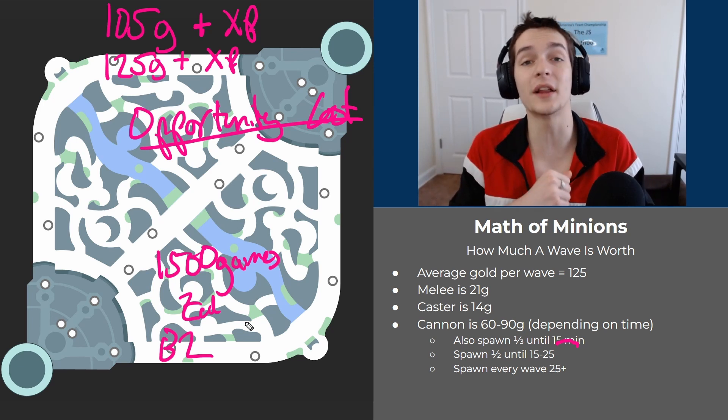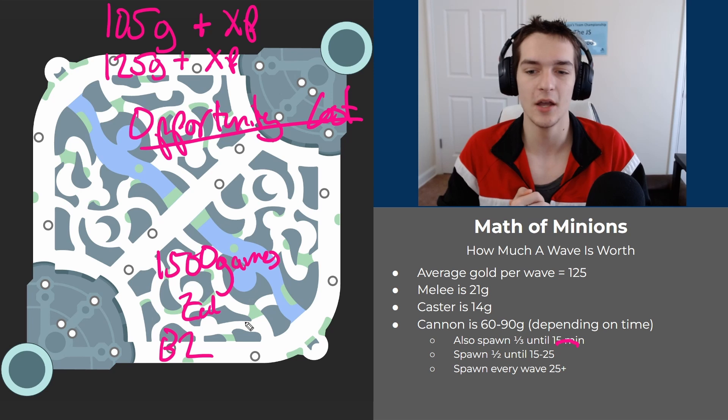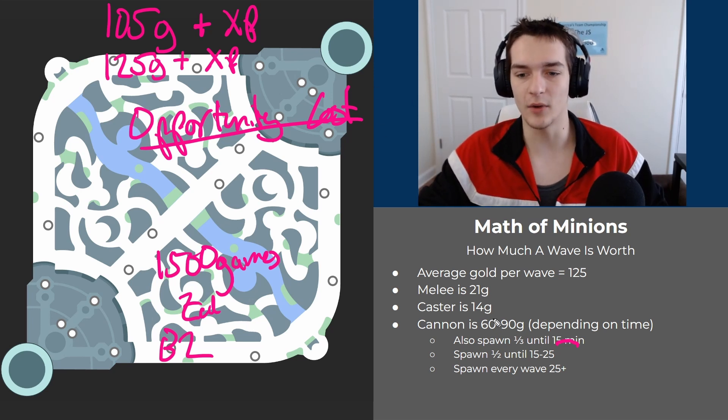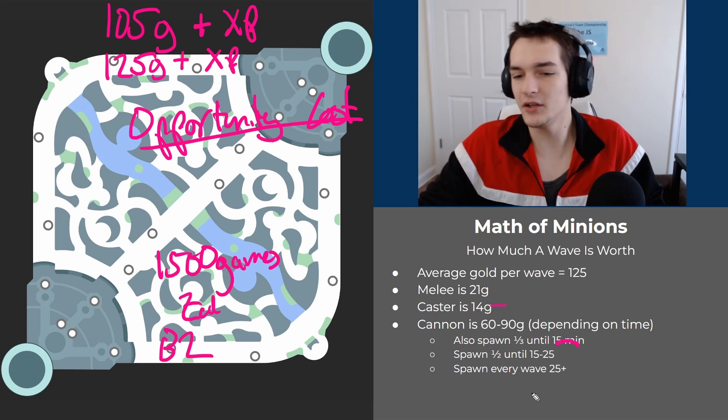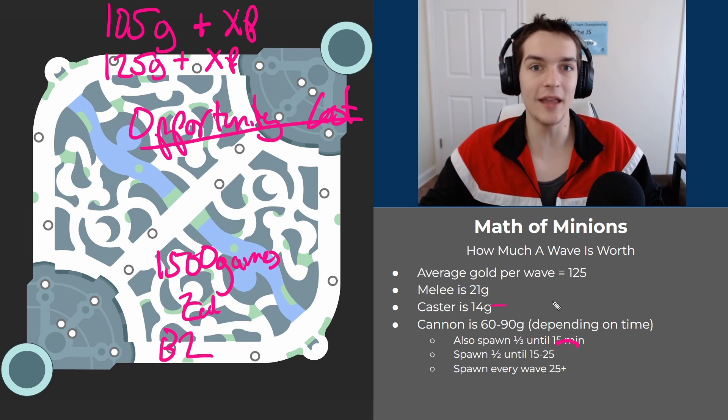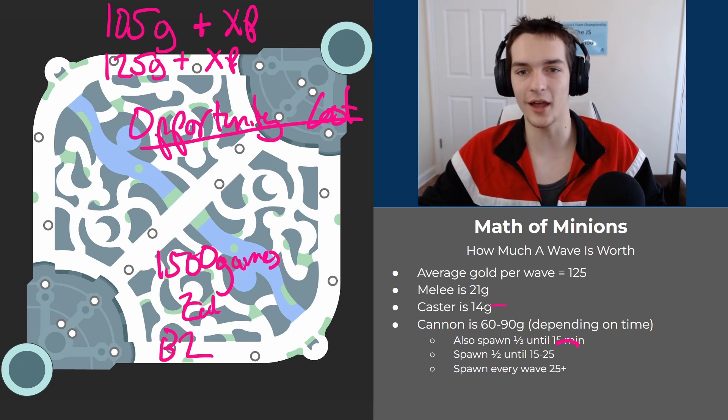You know the exceptions - 100% chance at a double kill is worth more than a wave. Or let's say there's only two minions to kill, that's only about 60 gold - you can go coin flip the kill for that.